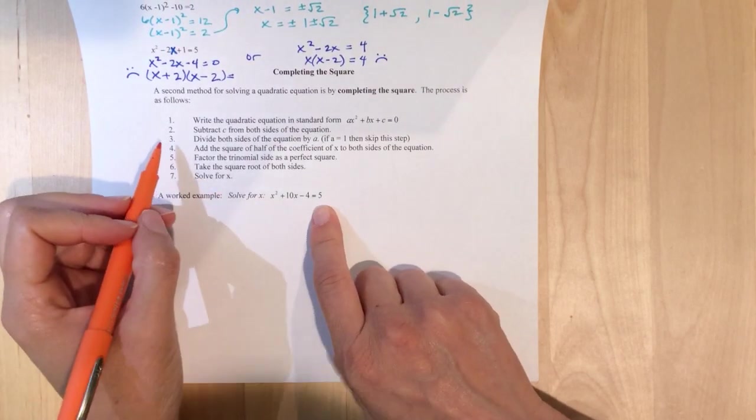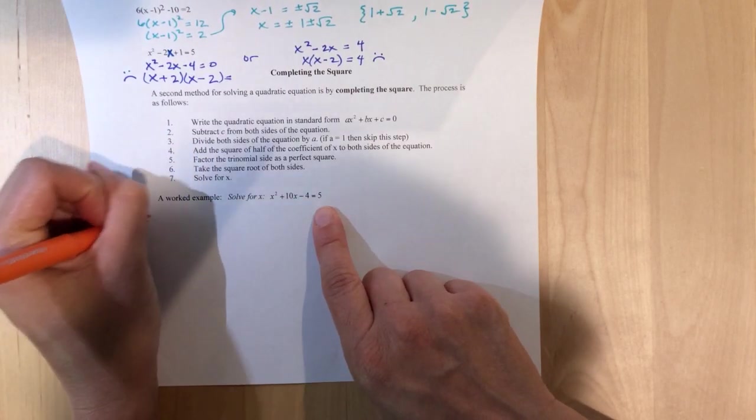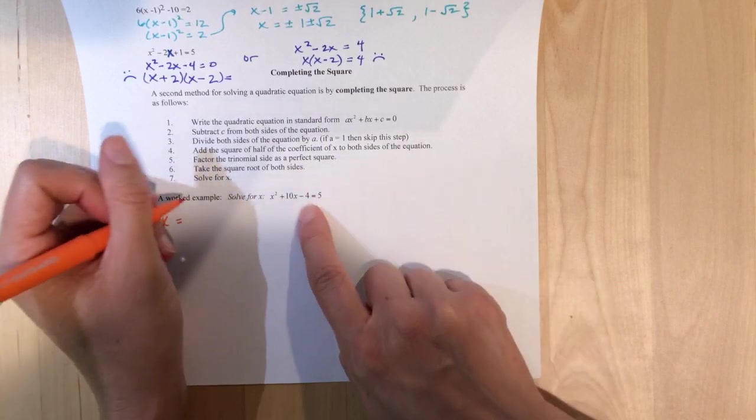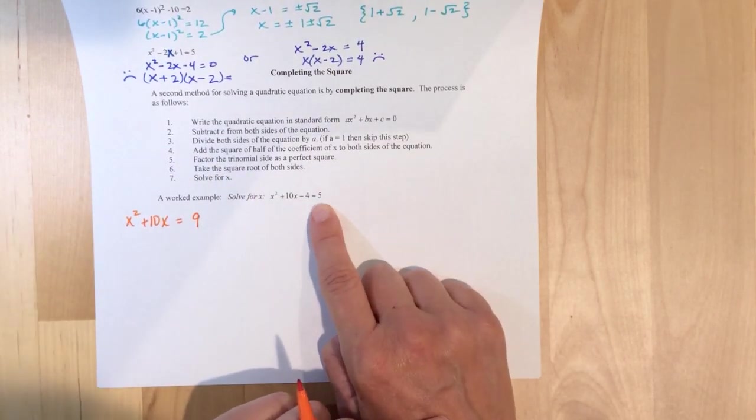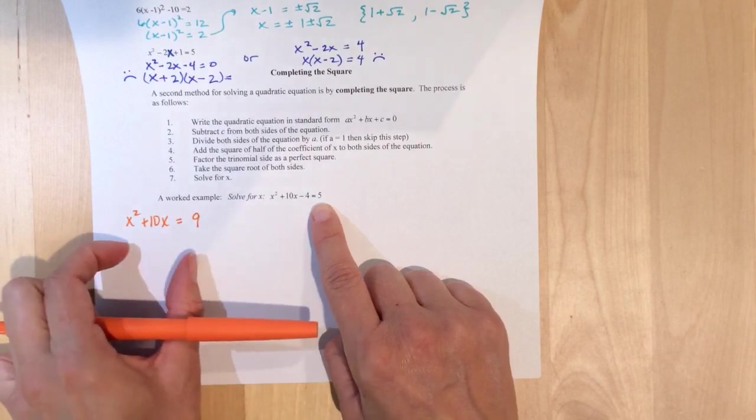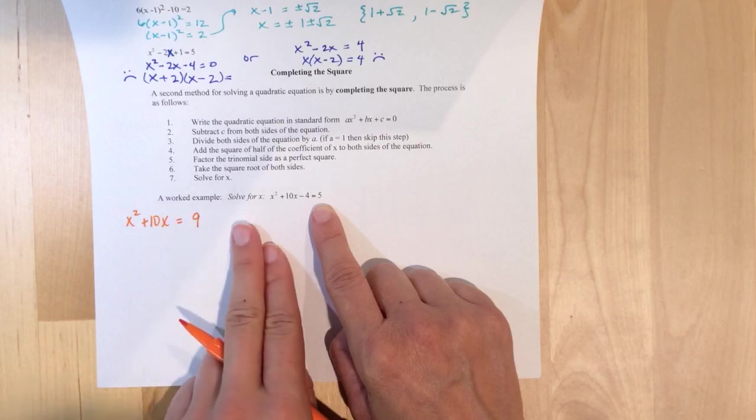So, again, like I said, I usually start with step 2. So, x squared plus 10x equals, let's see, 9. Because I'm adding the 4 over. Basically, I want my x's on one side, numbers on the other. Letters on one side, numbers on the other.